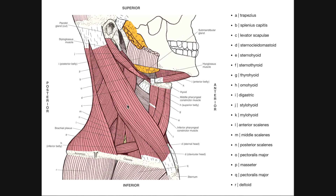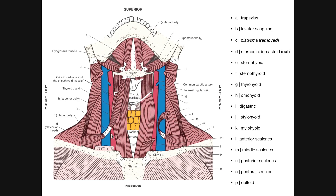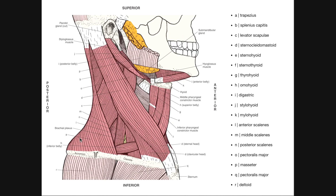Muscle A is the trapezius muscle. Remember the trapezius is mostly a posterior superficial neck muscle. However, on the lateral sides we can see a little bit of it sneaking through, and so here's our trapezius right here.